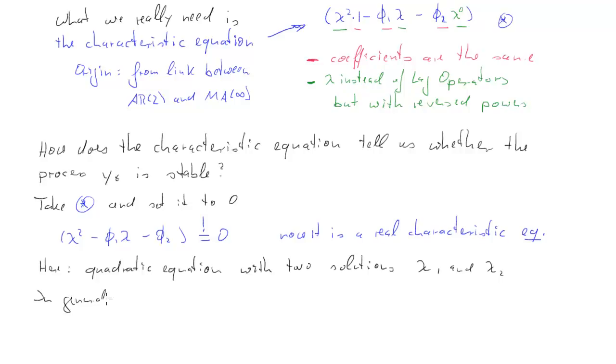So that was for an AR(2) process. Now, if we had an AR(p) process, we would have had an equation of the p-th order, and therefore we would have had p solutions for lambda. Lambda_i, where i goes from 1 to p. So we would have had p solutions.